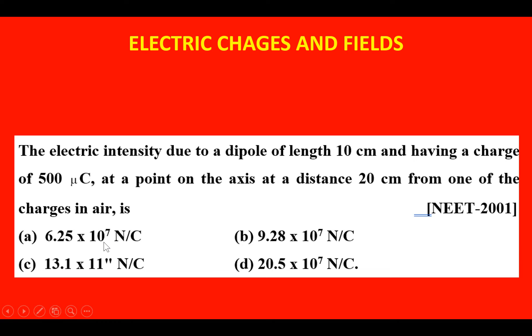The options are: (a) 6.25 × 10^7 newton per coulomb, (b) 9.28 × 10^7 newton per coulomb, (c) 13.1 × 10^11 newton per coulomb, (d) 20.5 × 10^7 newton per coulomb.